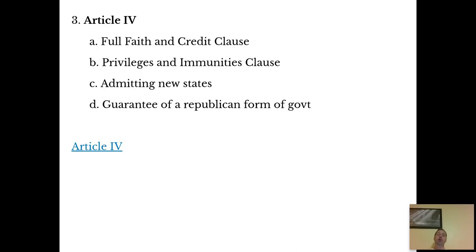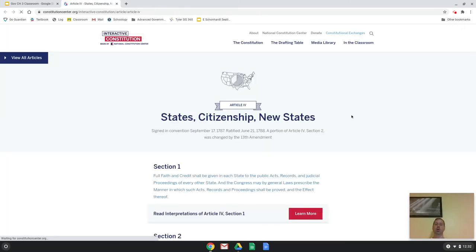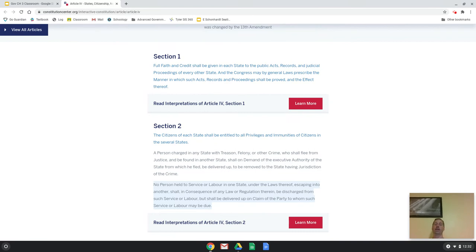One of the big things with federalism is Article 4, and there are four main things found in Article 4. One is the Full Faith and Credit Clause, Article 4 also has the Privileges and Immunities Clause, admitting new states, and the guaranteeing of a Republican form of government. Article 4, Section 1 says: 'Full faith and credit shall be given in each state to the public acts, records, and judicial proceedings of every other state.'